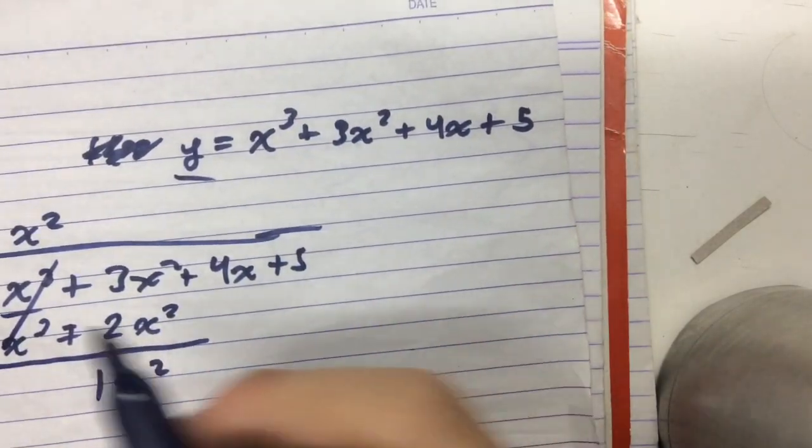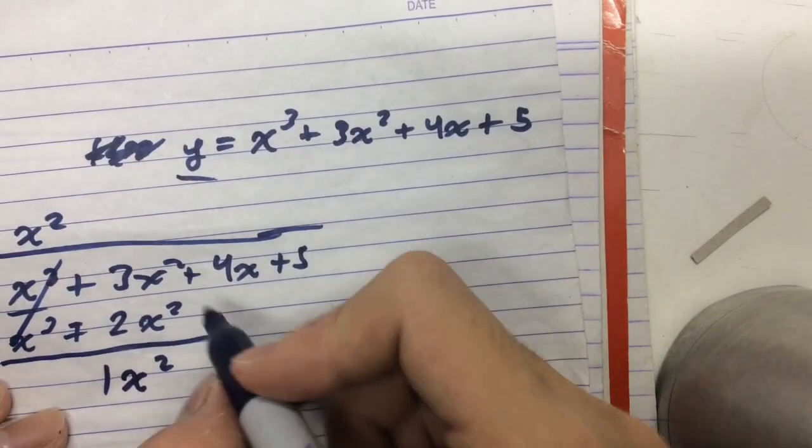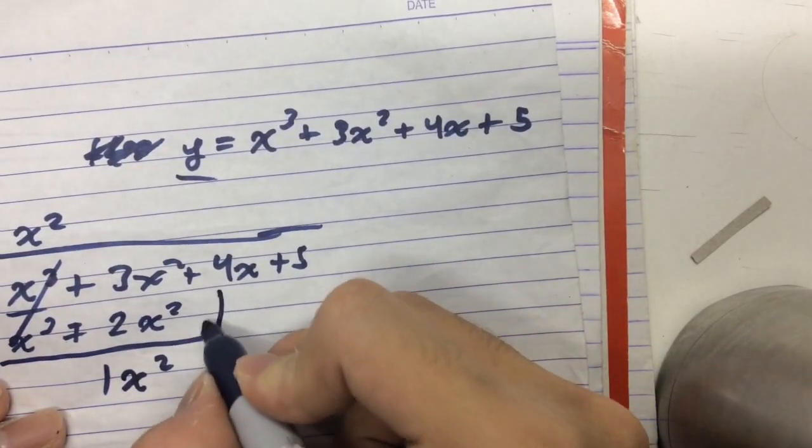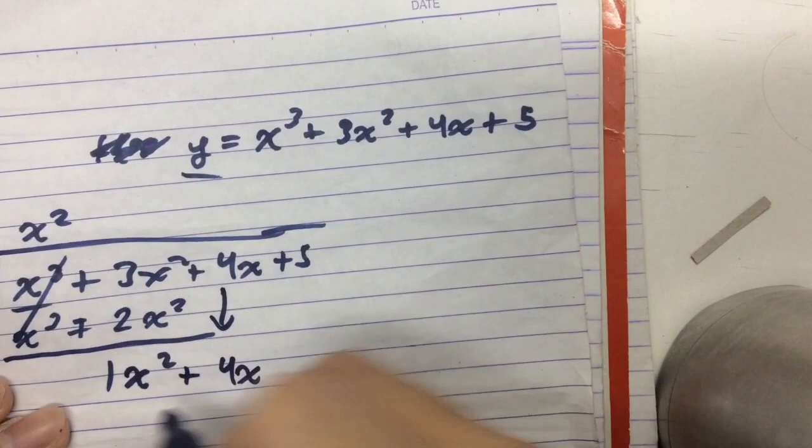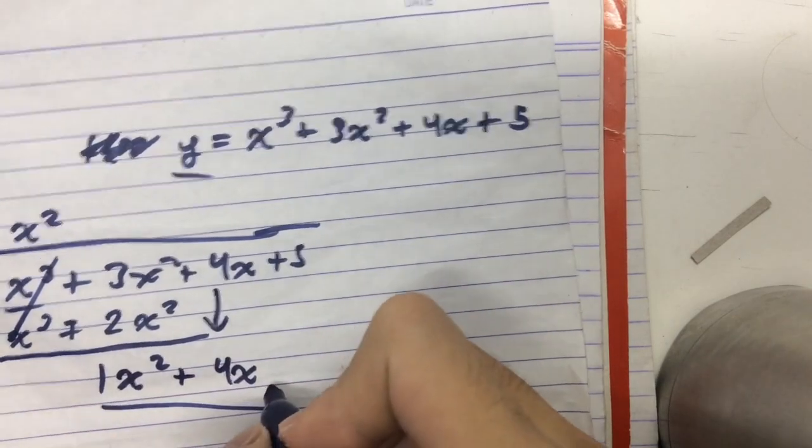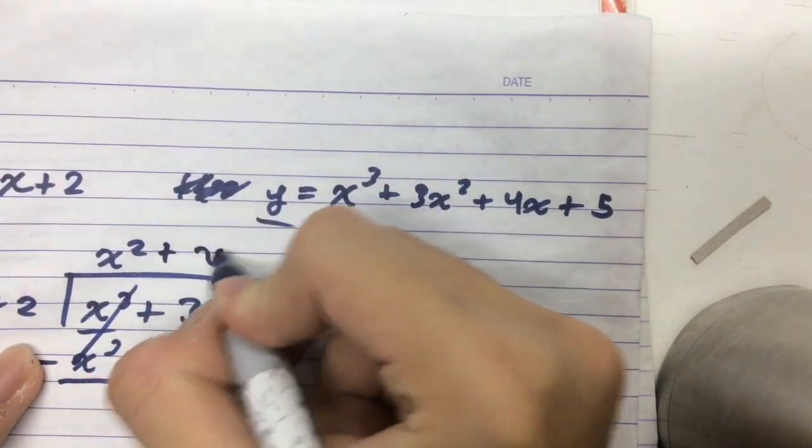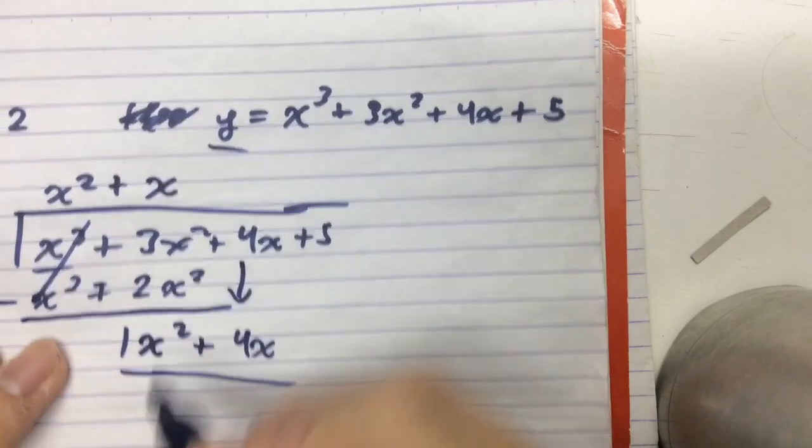And bring down plus 4x. And now we divide the first term here. And that would give us x. x squared divided by x is just x.